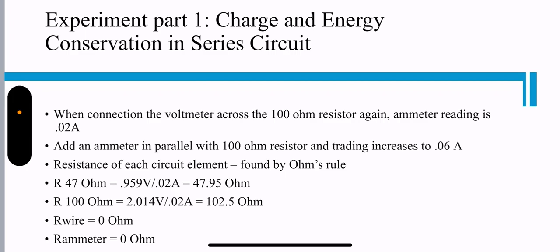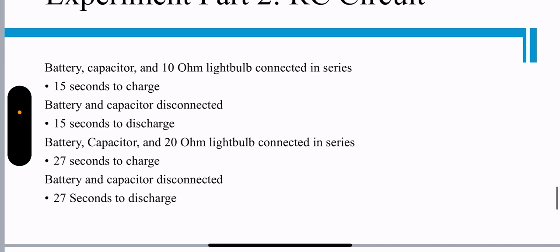The resistance of each circuit element is found by Ohm's rule. The resistance of the wire and ammeter is zero ohms.